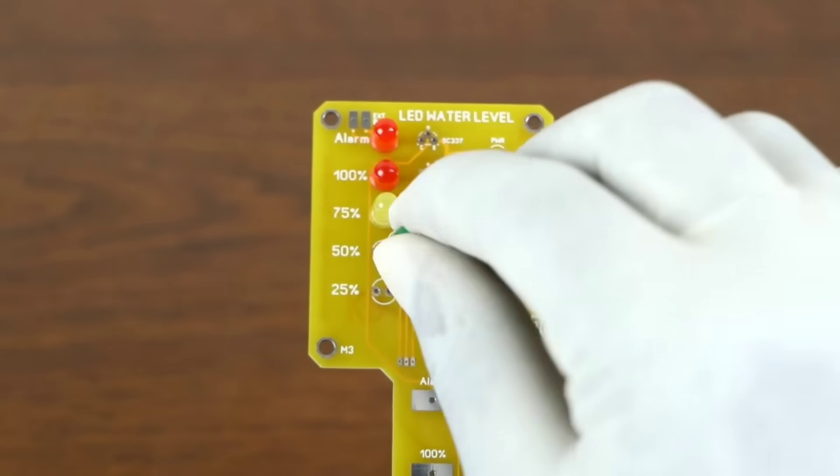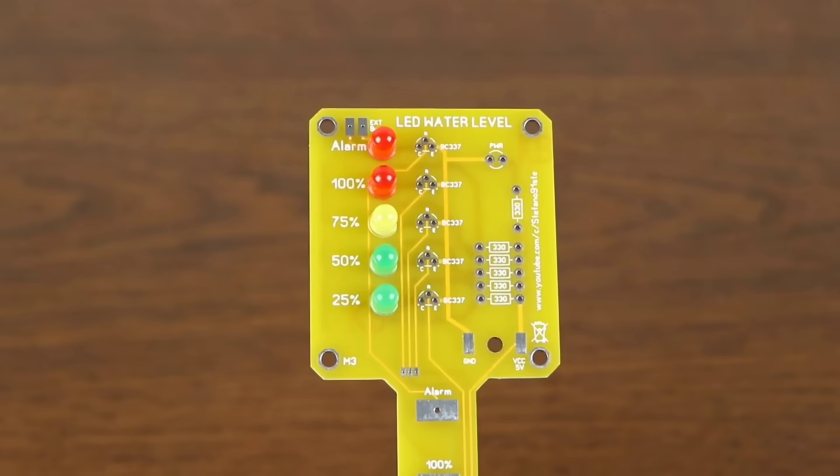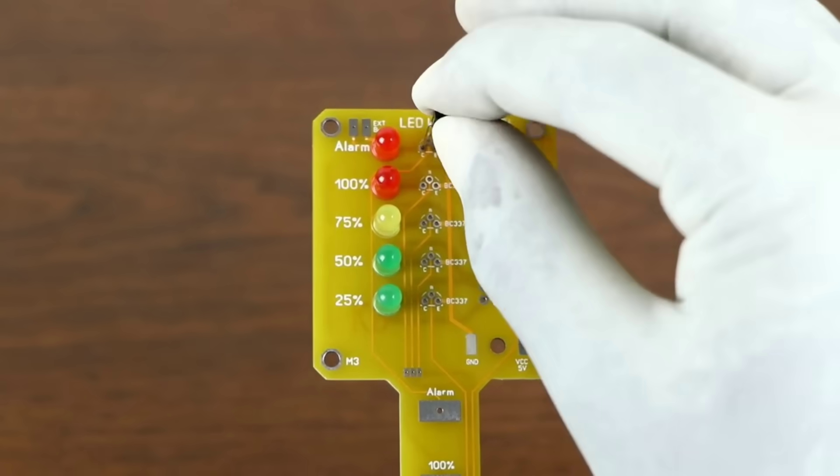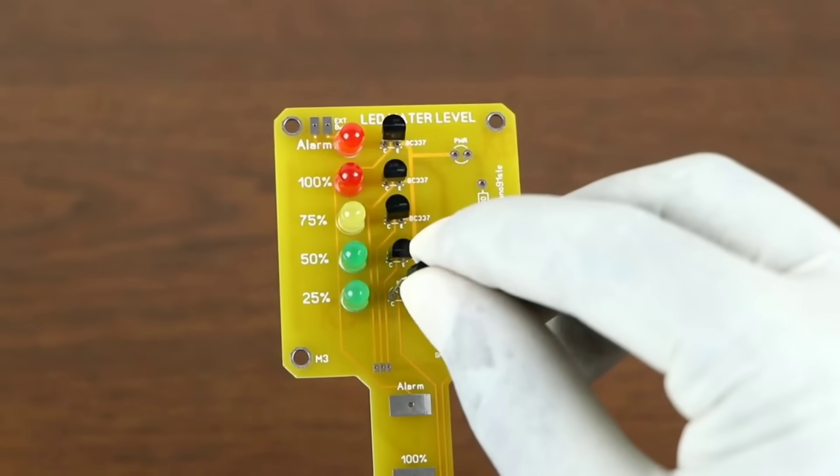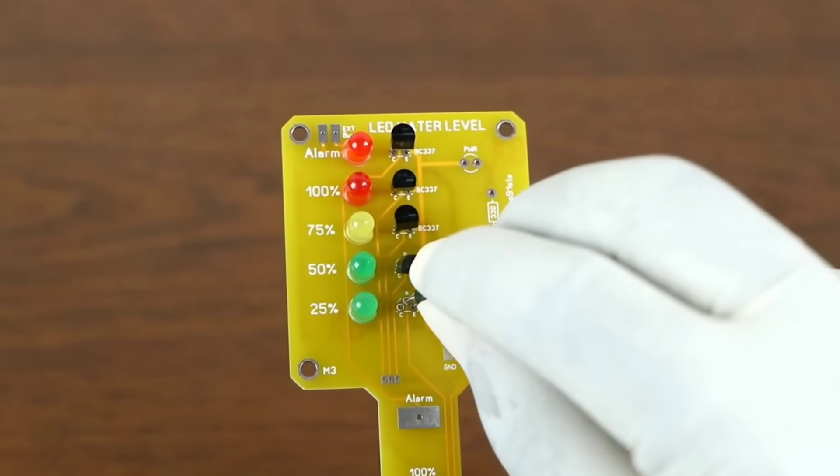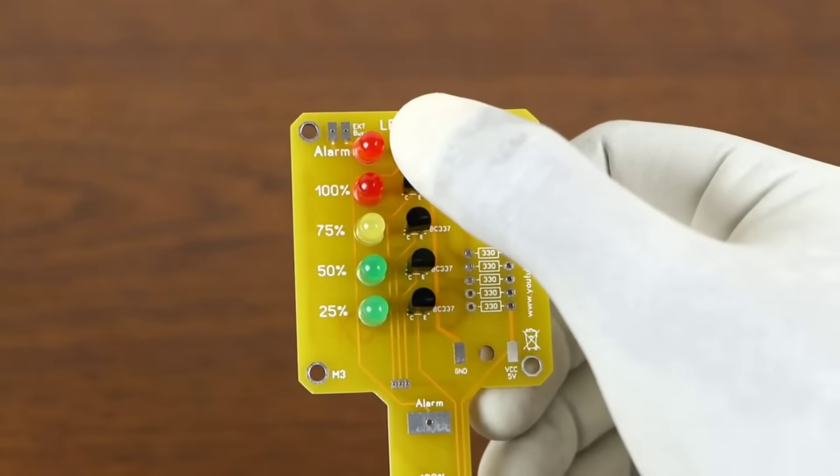We'll start placing every component carefully on the board and it's extremely important to set them in the correct direction, the exact orientation that I'm showing you. Make sure you follow the same. If any component is placed in the wrong direction, the circuit simply won't work. So take your time, match the direction, and fix every part properly in place.